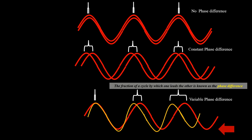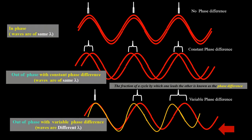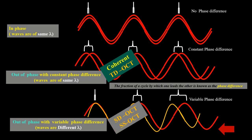In the top diagram there is no phase difference. In the middle part we have a constant phase difference, and at the bottom we have a variable phase difference. The first represents rays in phase of the same wavelength. The middle represents coherent light — out of phase but with a constant phase difference and the same wavelength — and this is used in time domain OCT. The bottom represents out-of-phase rays with variable phase difference made of different wavelengths, and this is used in spectral domain or swept source OCT.